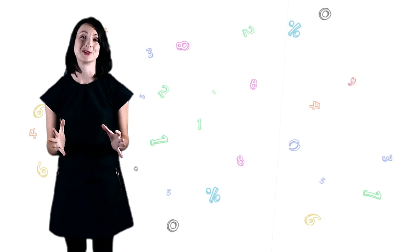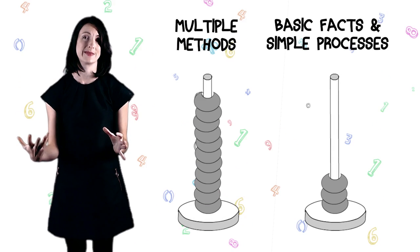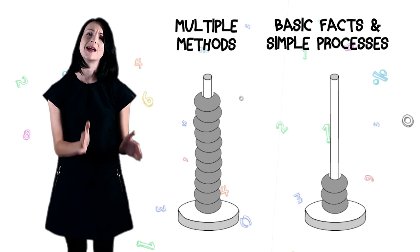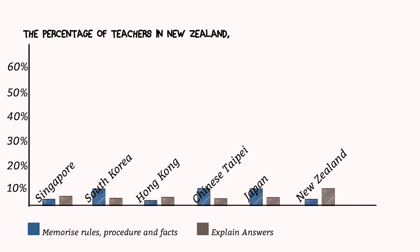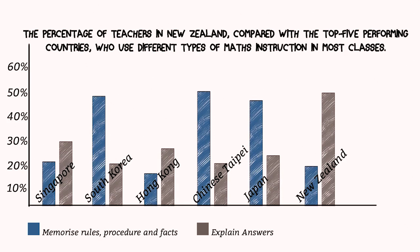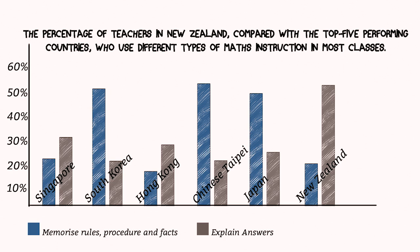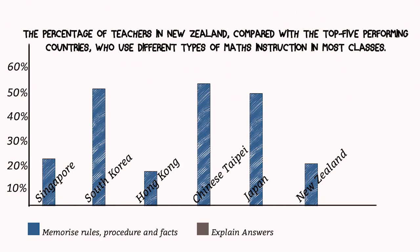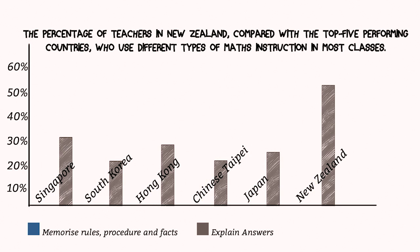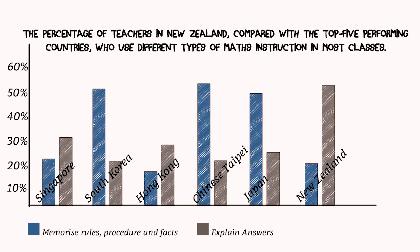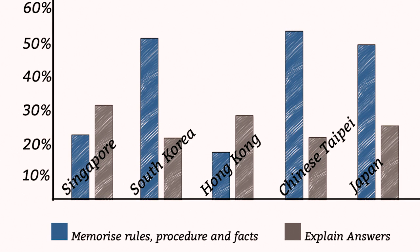There are some researchers who say that these new methods of teaching maths are better, but we know that since these methods were introduced to New Zealand schools 15 years ago, maths results have been in decline. The New Zealand Initiative's research shows that there has been too much emphasis on learning multiple methods and not enough on just learning the basic facts and simple processes. This graph shows the percentage of teachers in New Zealand compared with the top five performing countries in maths who use different types of maths instruction in most classes. The top countries spend more time memorizing rules, procedures, and facts, and less time explaining their answers compared to New Zealand. Our report shows that children in these East Asian countries aren't just regurgitating facts to get good grades, but they are also better at solving novel maths problems.